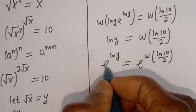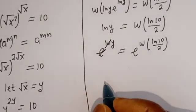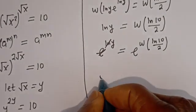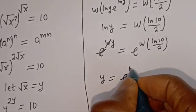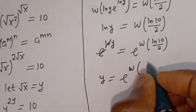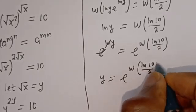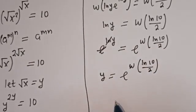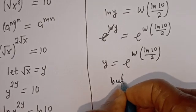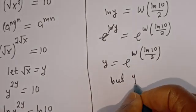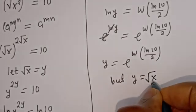The e and ln cancel, therefore y is equal to e to the power of W bracket ln of 10 over 2. And since y is equal to square root of s, we have square root of s is equal to e to the power of W bracket ln of 10 over 2.